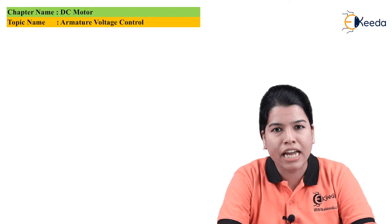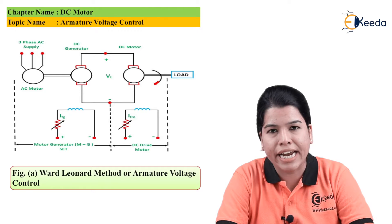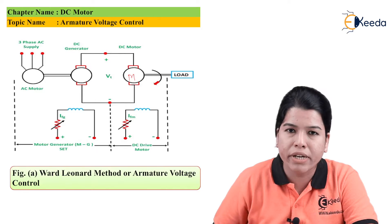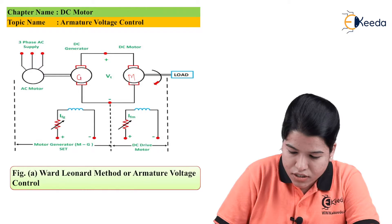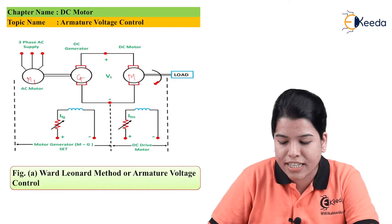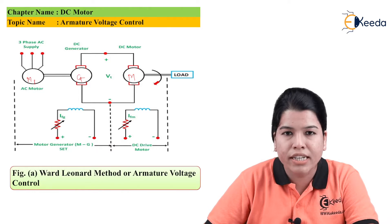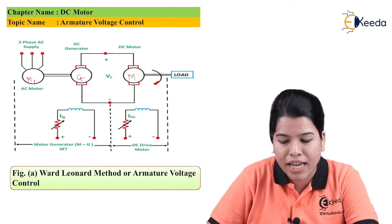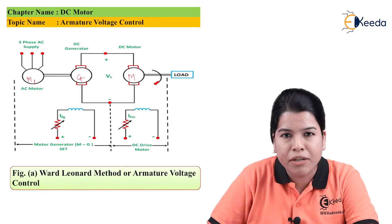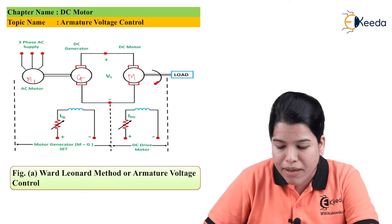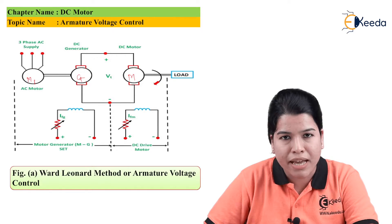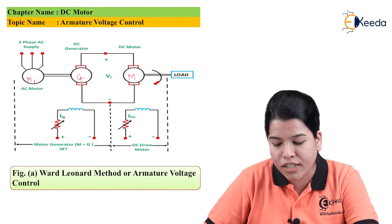The figure shows the diagram for the Ward-Leonard method, which was proposed in 1891. Here, M is the motor whose speed is to be controlled, G is the generator, and M1 is the AC motor coupled to the generator. This AC motor can either be an induction motor or a synchronous motor. It is connected to a three-phase supply, takes electrical input, and produces mechanical output.